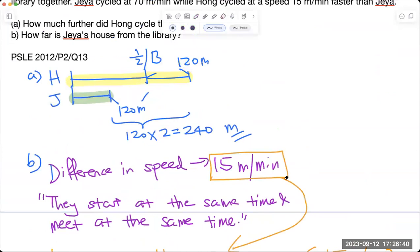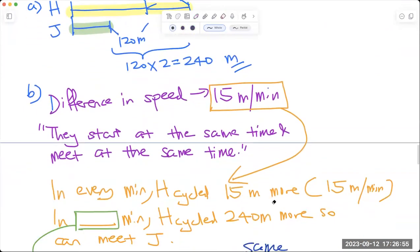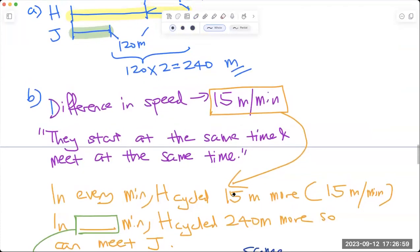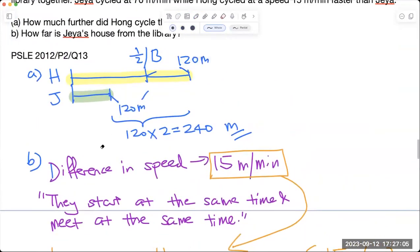For the fact that Hong has to travel more and cover a longer distance, Hong's speed must be higher. So what does the difference in speed mean? It means that in every minute Hong actually covers 15 meters more.